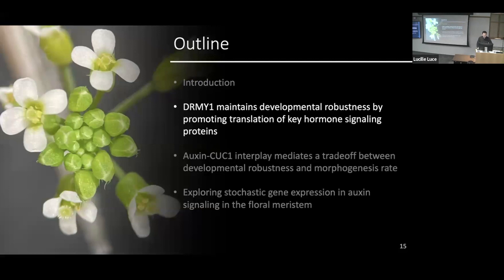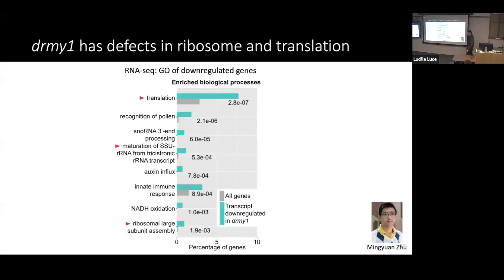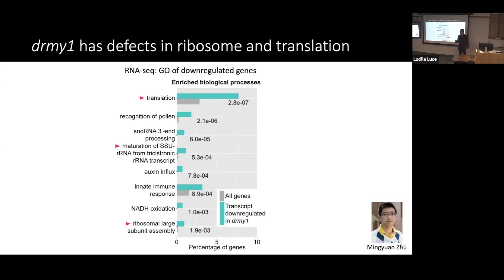This leads into my first project: how dreamy1 maintains developmental robustness by promoting translation of key hormone signaling proteins. To understand what's wrong in the dreamy1 mutant, we previously did RNA sequencing. One finding was that genes encoding proteins involved in translation, ribosome biogenesis, and assembly are down-regulated in the dreamy1 mutant compared with wild-type, suggesting that something is wrong with ribosome assembly and protein translation.